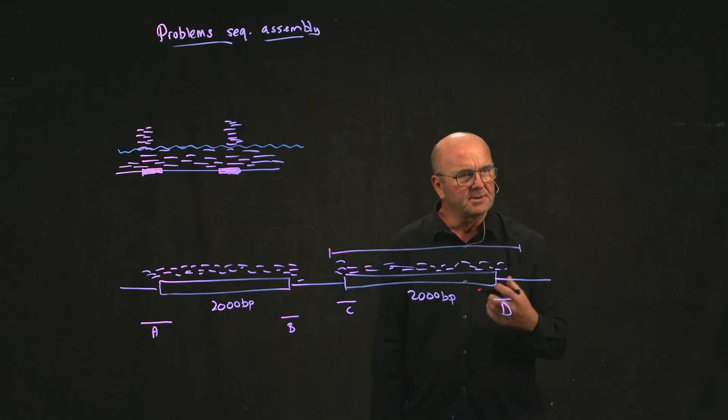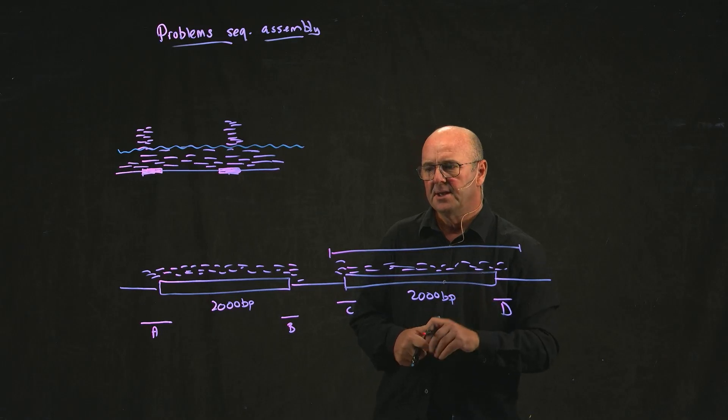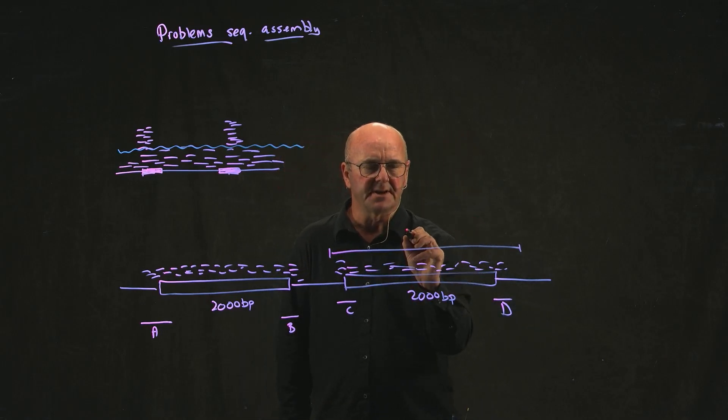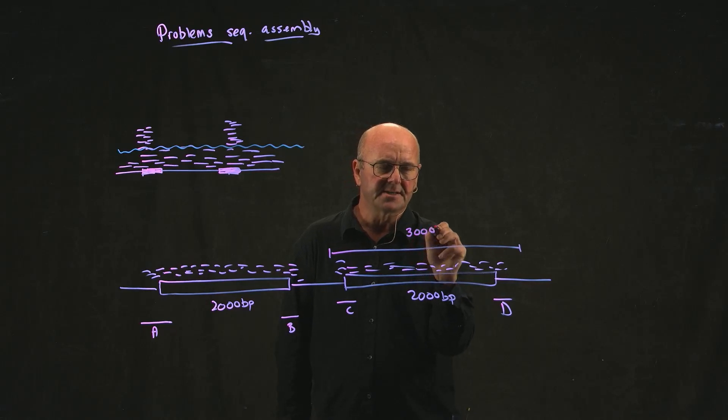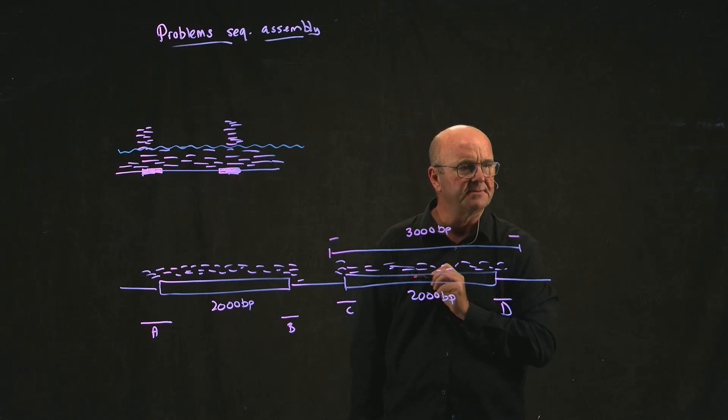So that's one of the reasons that we do these larger insert mate paired libraries like I just talked about. Because then if we make this, if this is 2,000 base pairs, and we have our insert that's 3,000 base pairs, and we've sequenced 150 bases and 150 bases...